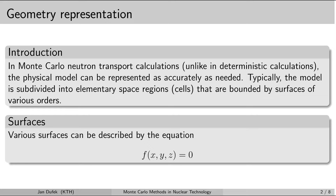Let's have a look at the way how different surfaces are captured by Monte Carlo codes. Basically any surface can be expressed in terms of its equation in this form. The left-hand side must equal zero. The left-hand side is a function of three parameters: the coordinates x, y, z.